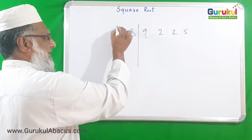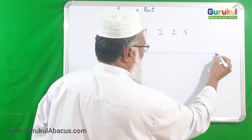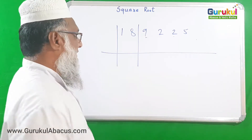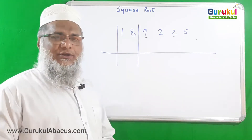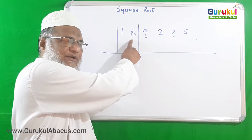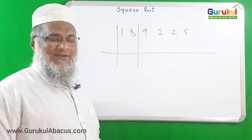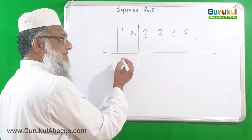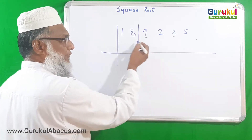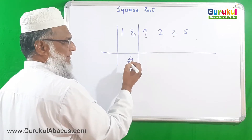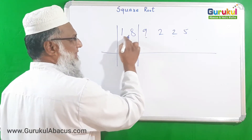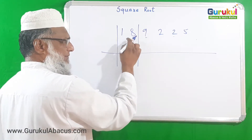I am drawing a dividing line here and we are going to solve this example. The first pair is 18. We should think which perfect square number is nearest to 18 but smaller than 18 — that is 16, because four fours are 16. So the first digit of the answer is 4, and its square is 16.